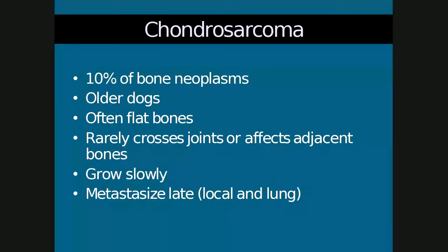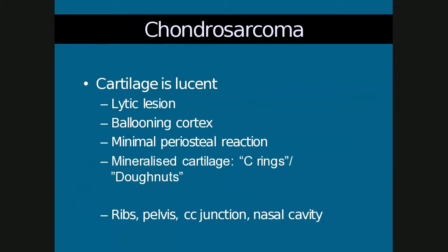Chondrosarcoma is much less common — the second most common malignant bone neoplasm, comprising only about 10% of cases. It affects older dogs and typically the flat bones such as the pelvis. It does not cross joints or affect adjacent bones. It grows much slower with later metastasis to the lungs, giving a better prognosis. Because it is a cartilage tumor and cartilage is lucent on radiographs, we see a lytic lesion with ballooning cortex pushed outward, minimal periosteal reaction, and as cartilage can mineralize, C-rings or donuts appear on radiographs.